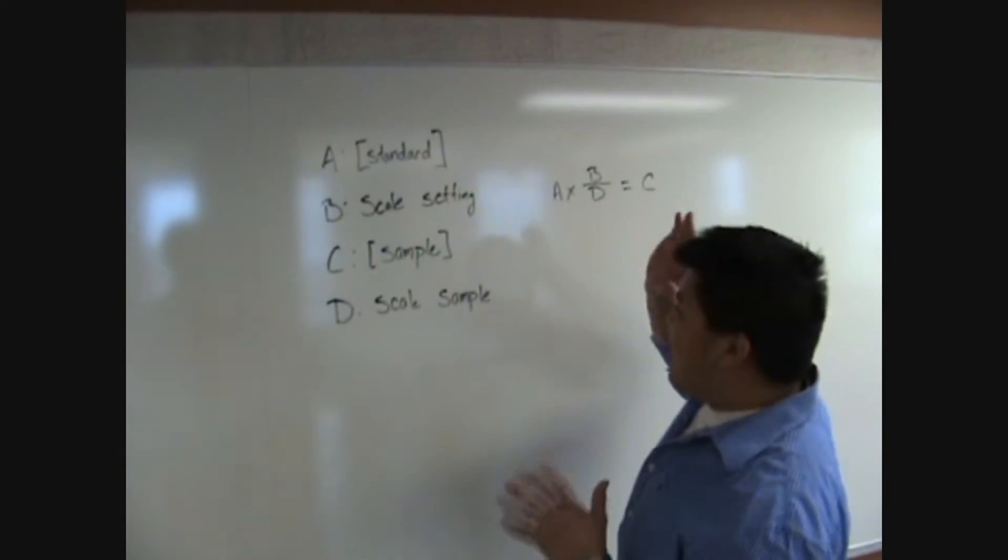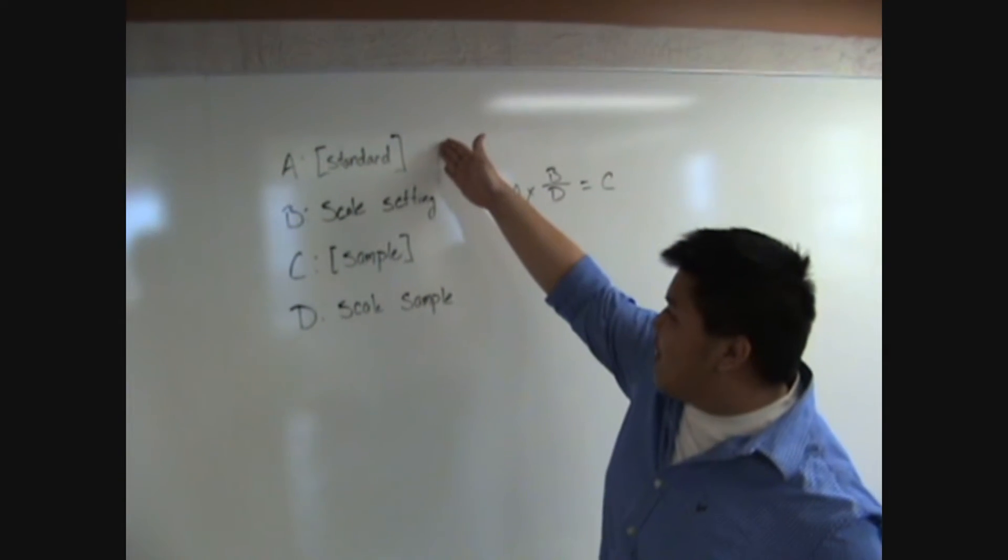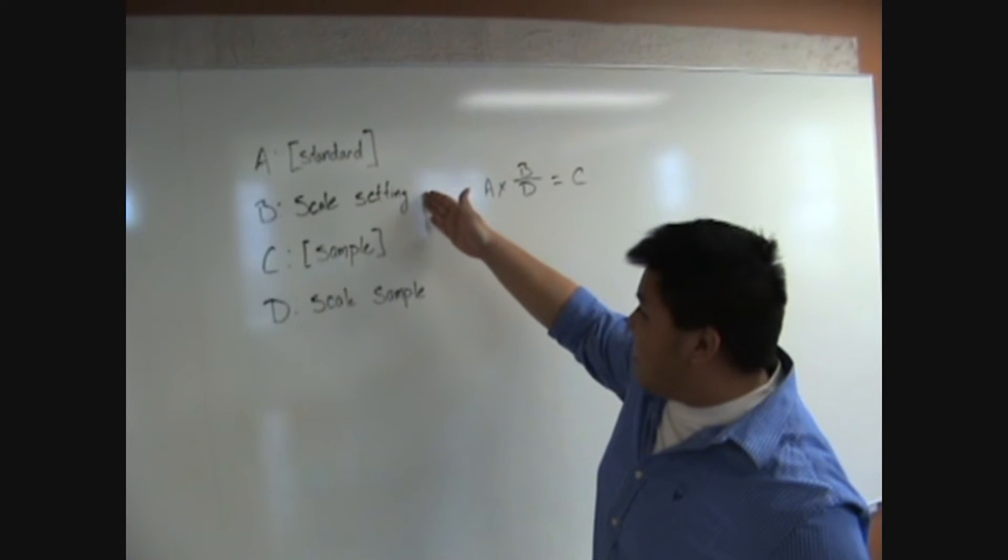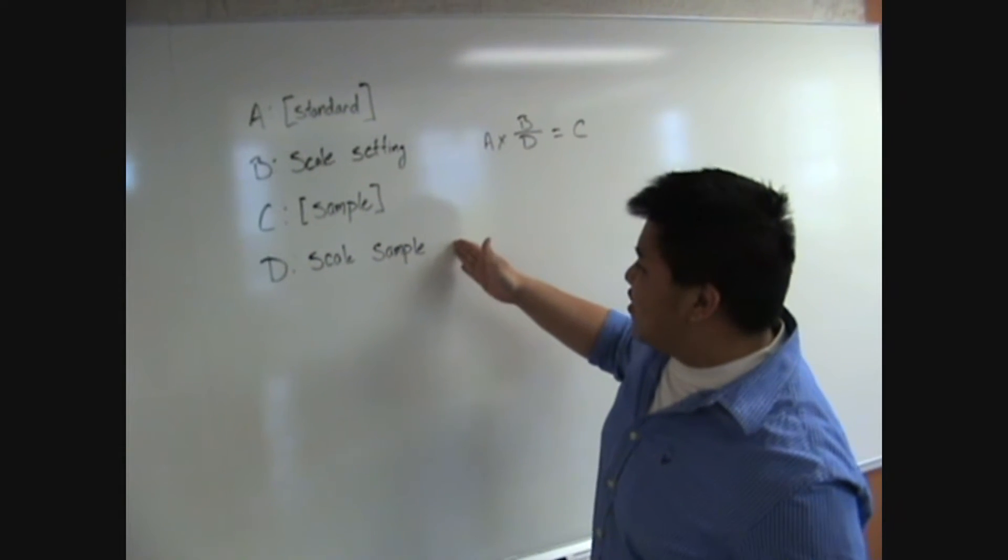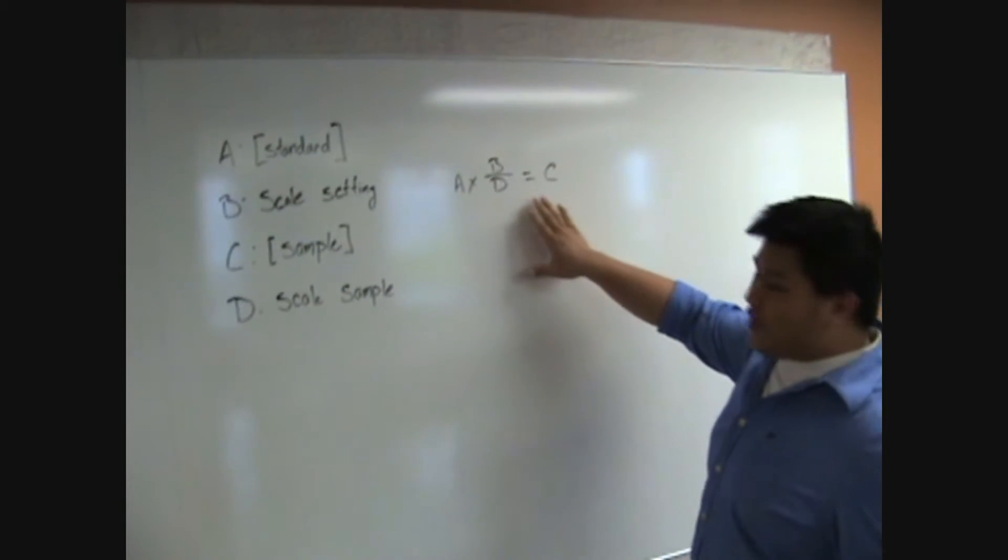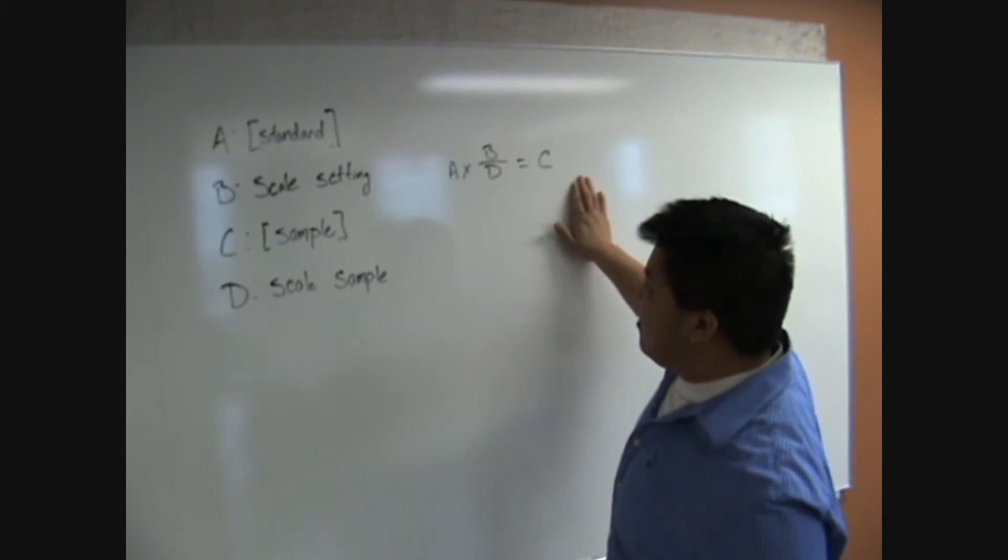Alright, so now we have four things for one simple equation. We have A, our concentrated standard, B, our scale setting, C, the sample concentration, and D, our scale sample. You can take this really simple formula, A times B over D equals C. Alright?